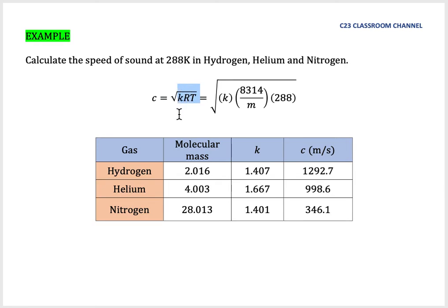What you should do is you need to remember the equation for speed of sound. It is square root of kRT. And you must know that we are dealing with hydrogen, helium, and nitrogen here. This is not air. So we need to calculate our own k and a new gas constant.